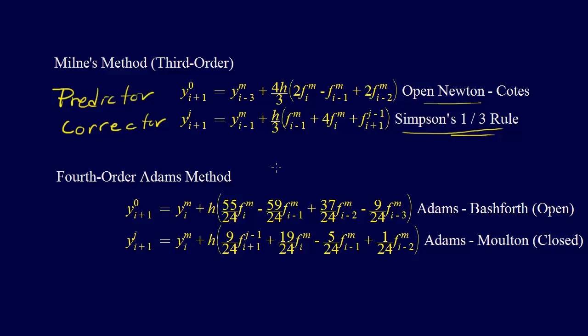But if we have a large step size, we'll have to do a lot of predictor, corrector, predictor, corrector. So there's sort of this balance between having a large enough step size that you're efficient, but a short enough step size that you don't have to predict correct forever.